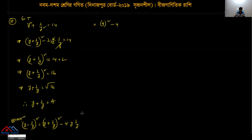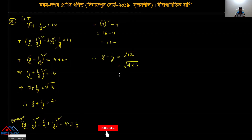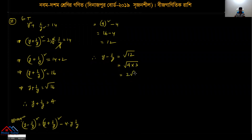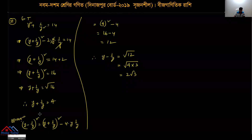With y + 1/y = 4, when solo = 4, 4 × 3 = 12. So y - 1/y: taking the root, √12 = √(4×3) = 2√3. The square root of 4 is 2, and of 3 is √3. So y - 1/y = 2√3.